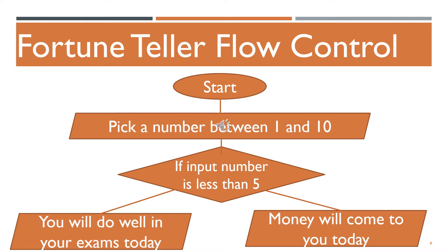Our one decision inside the diamond asks the question: is the inputted number less than 5? This is our condition. Based on whether this is true or false, one of the print statements will be run. If the inputted number is less than 5, meaning the condition is true, the lower left block is run. If not — meaning it is equal to or greater than 5 — the lower right block is run. Only one of the fortune print statements will be run, not both nor neither.